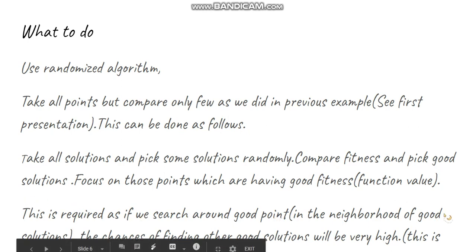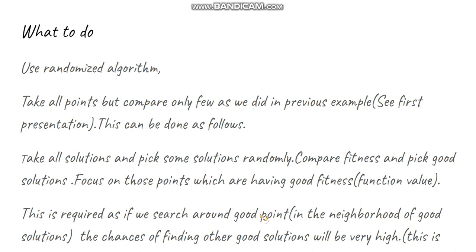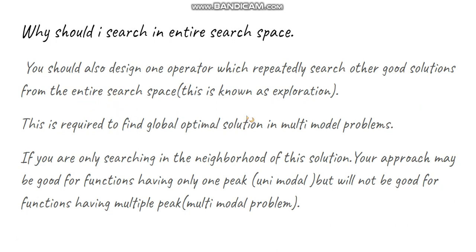So which points do we need to select? Basically, we start with some solutions and compare them to see which solution produces a good fitness value. That solution works as a starting point for our algorithm, because if you capture one good solution, the chances of finding other good solutions around it will be very high. This is known as exploitation.